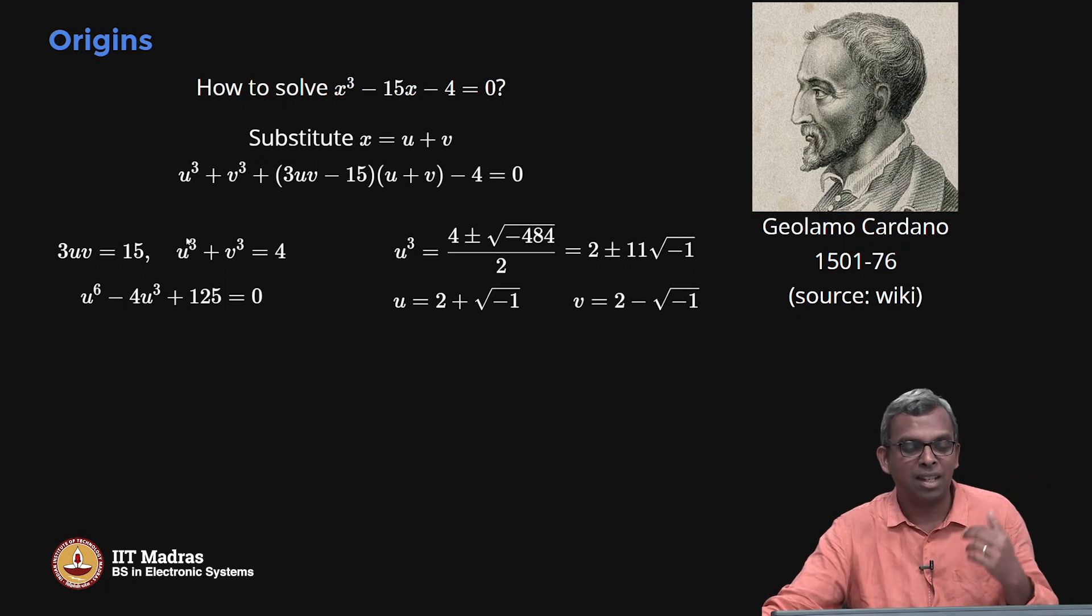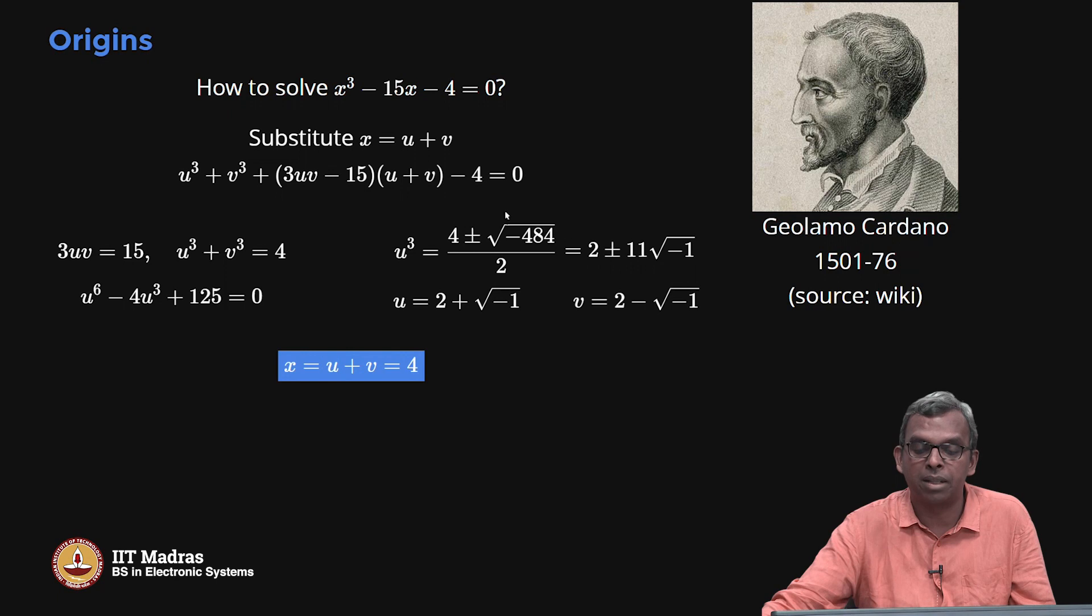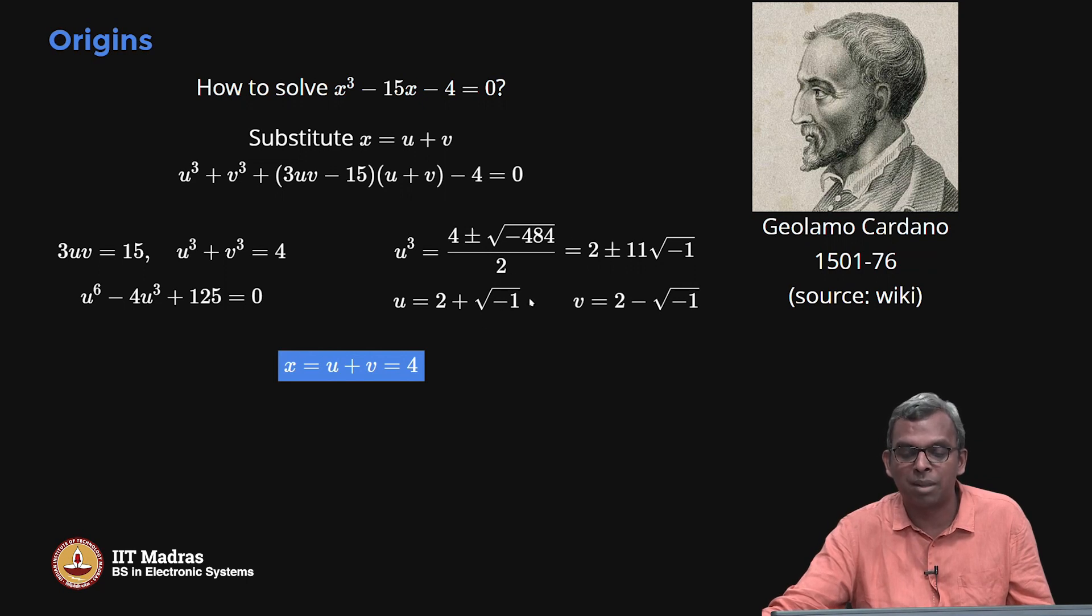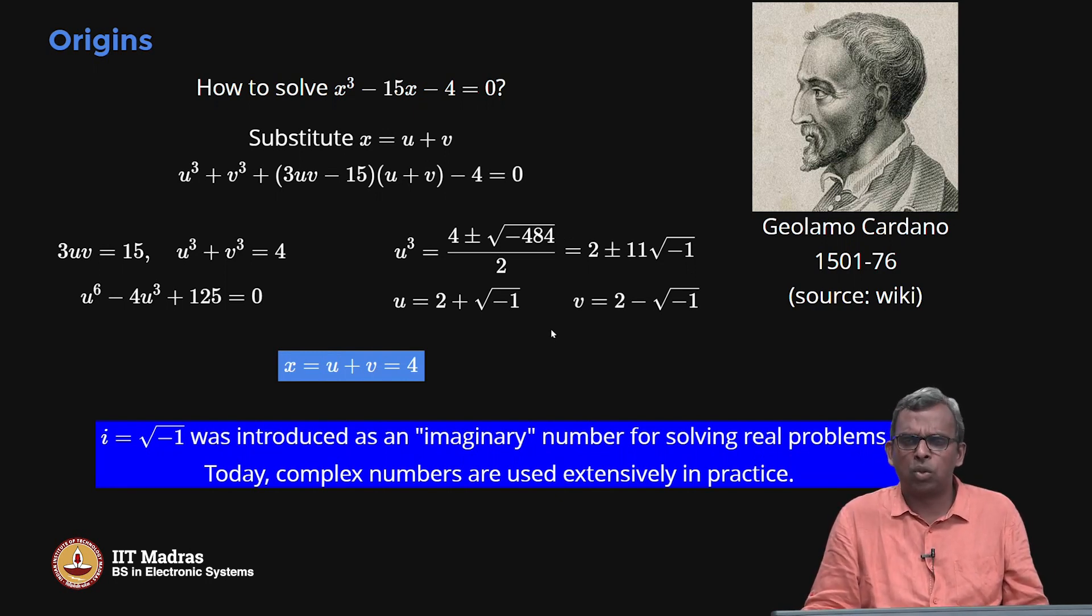Then you get 4 minus minus 1 and that is 5, uv = 5 and u³ is 2 + 11√-1, v³ is 2 - 11√-1. You add these two, this 11√-1 goes away and you get 4 by magic. That is what is brilliant about this method. Even though you had to invent a square root of a negative number in the middle, finally you got a real number as the answer. The root is u + v = 4. You can check that 4 is a root here, 64 - 60 - 4 = 0. What you found in the way is, if you pretend that this root of minus 1 is okay, you have something here and work with it, you can solve real problems. This is how complex numbers originated. i = √-1 was introduced as an imaginary number for solving very real problems.